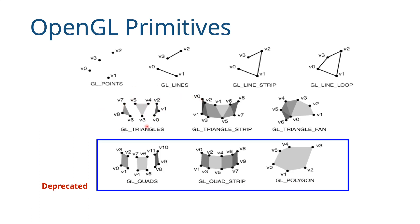GL_TRIANGLE_STRIP shares vertices between adjacent triangles: V0 V1 V2, then V1 V2 V3, then V2 V3 V4, and so on. GL_TRIANGLE_FAN has the first vertex common to all triangles. When using triangle strip or triangle fan, refer to a diagram to ensure the vertex ordering is correct. Earlier versions of OpenGL up to 2.1 also had quads, quad strips, and polygon primitives, but these are now deprecated — you will only use lines and triangles.